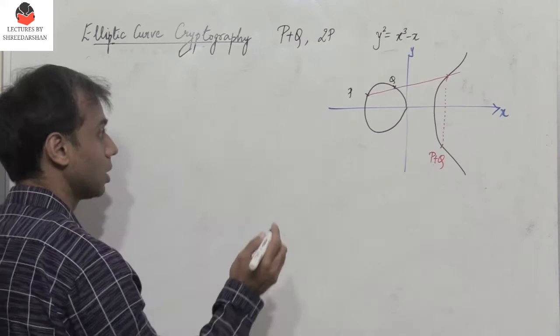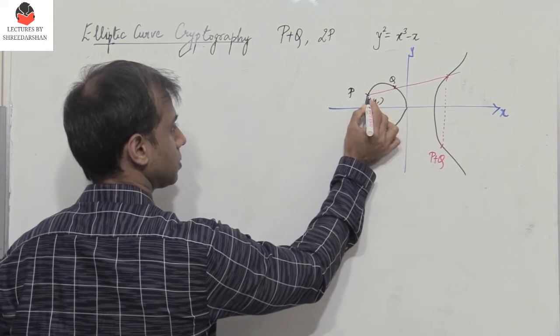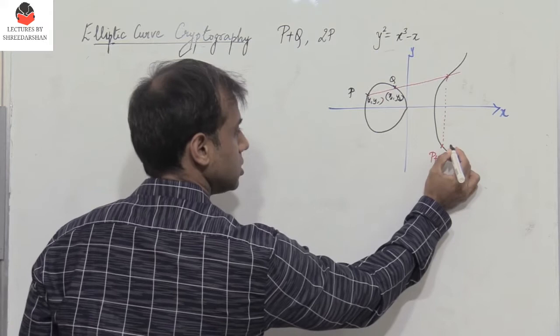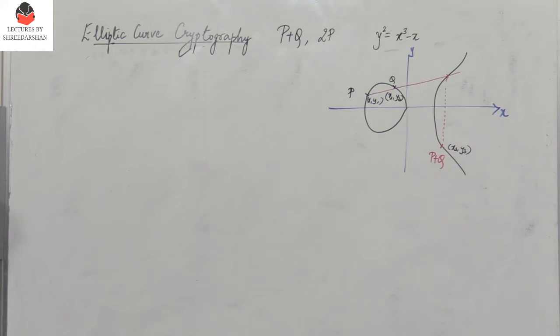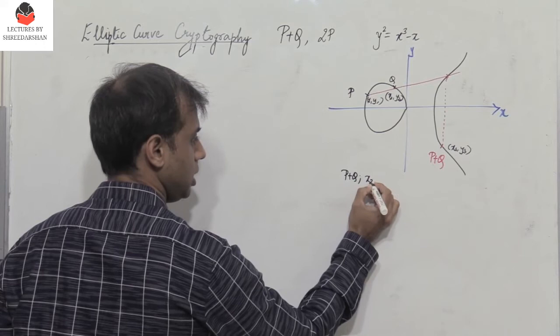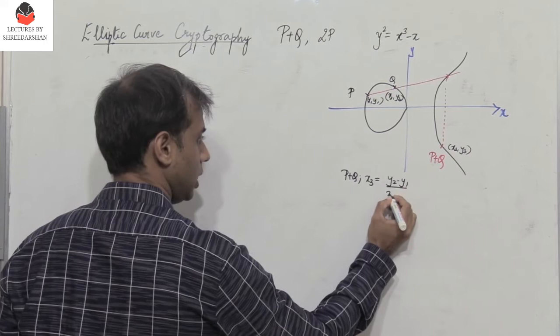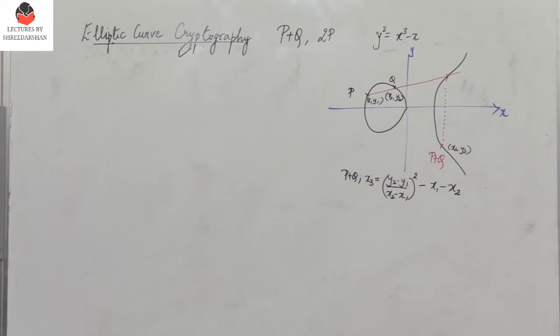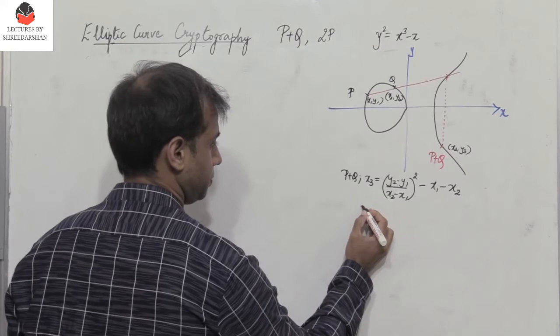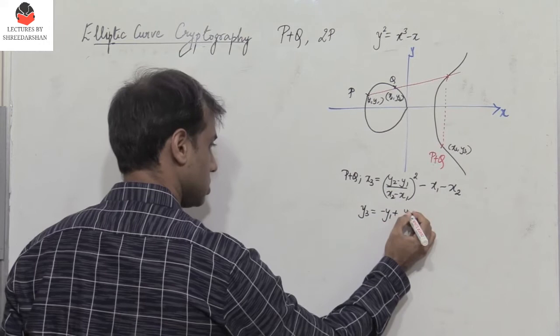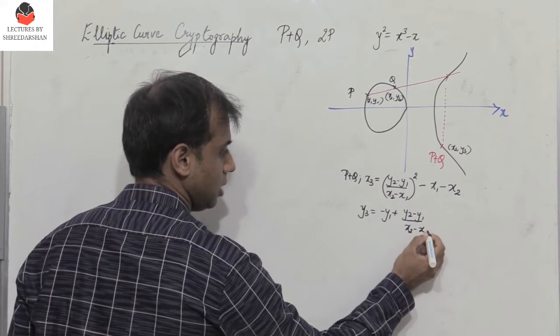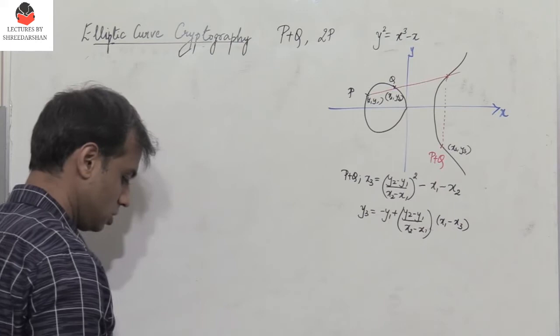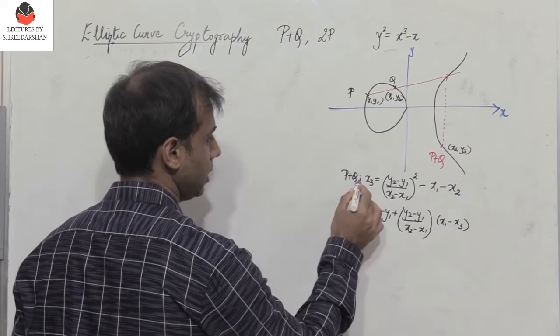To find the coordinates of point P plus Q, assume P has coordinates (x1, y1) and Q has coordinates (x2, y2), and let P plus Q have coordinates (x3, y3). Then x3 equals ((y2 minus y1) divided by (x2 minus x1)) squared, minus x1, minus x2. And y3 equals minus y1 plus ((y2 minus y1) divided by (x2 minus x1)) into (x1 minus x3).